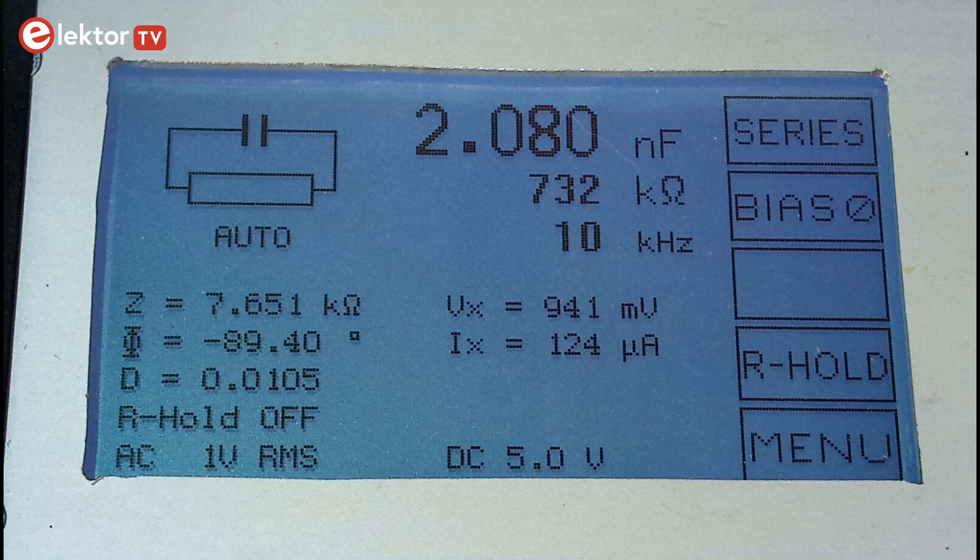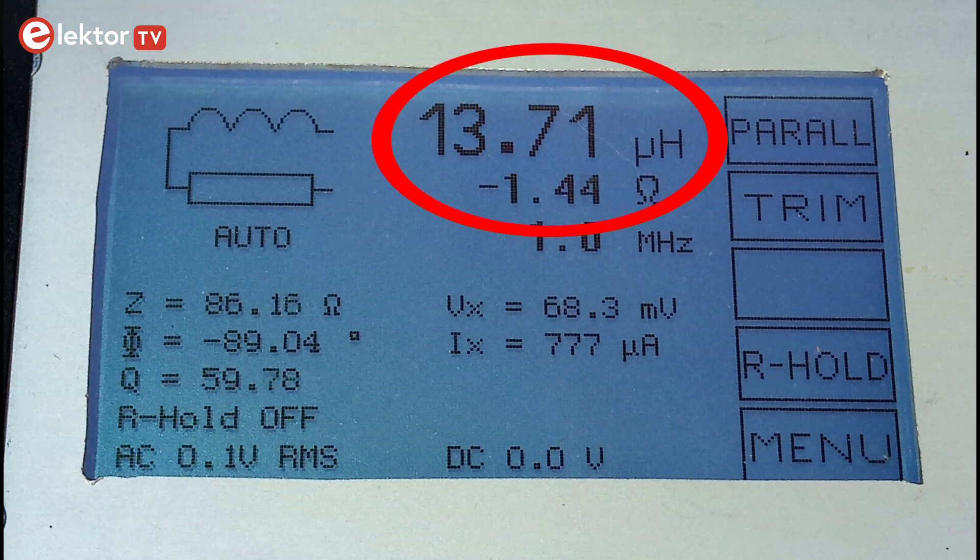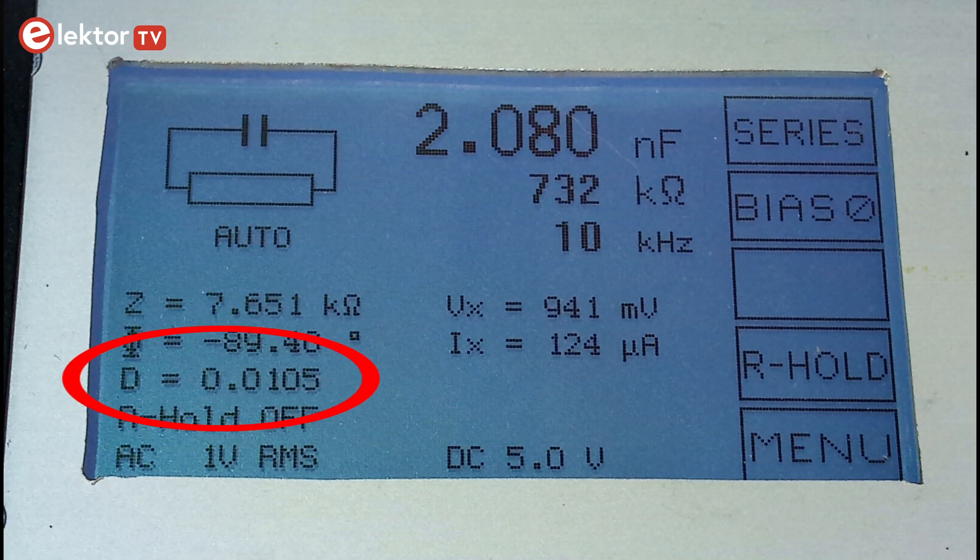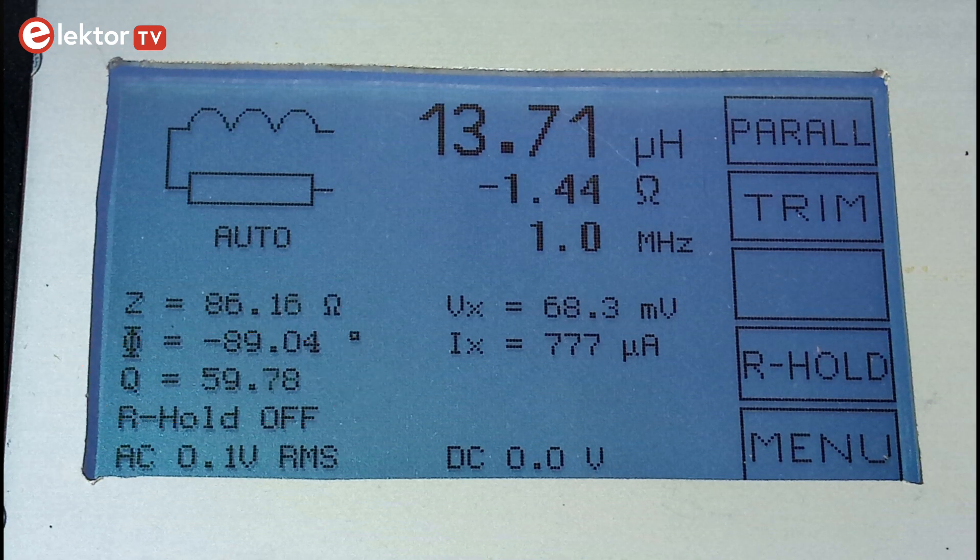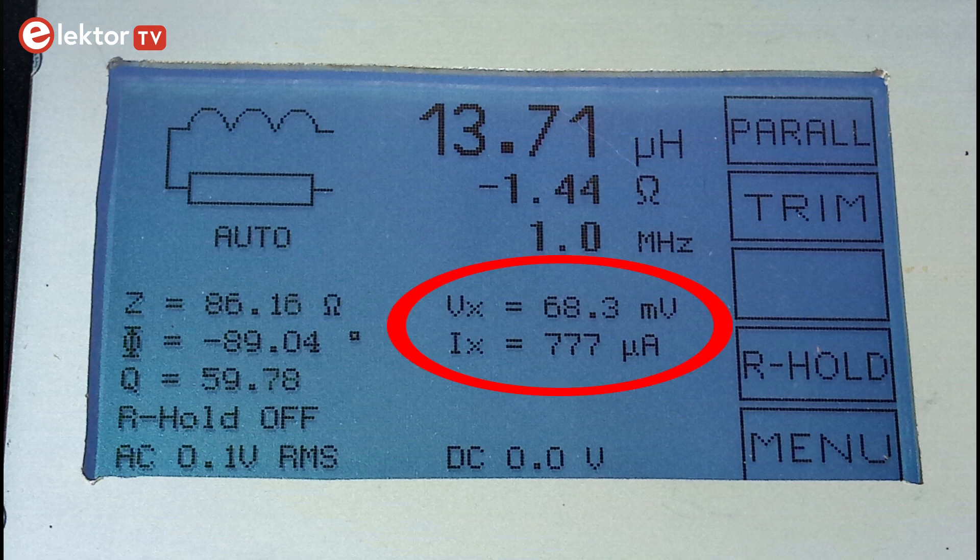The LCR meter displays capacity, inductance, ESR, impedance Z, phase phi, dissipation factor D or quality Q, and the values of the voltage over the DUT, the device on the test, VX, and the current running through it, IX. I recorded all these values.